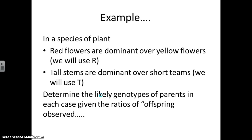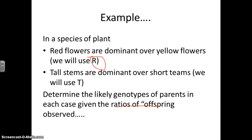We're going to take a look at an example. We're going to deal with plants because they're just easier. So in plants, red flowers are dominant over yellow flowers and we're going to be using R for this trait. And then tall stems are dominant over short stems and we're going to be using T for this trait. The instructions for all these problems is that we're going to be given ratios of offspring or number of offspring that we see in each mating that's occurring. And our job is to predict what the genotype of the parents were that produced these offspring.